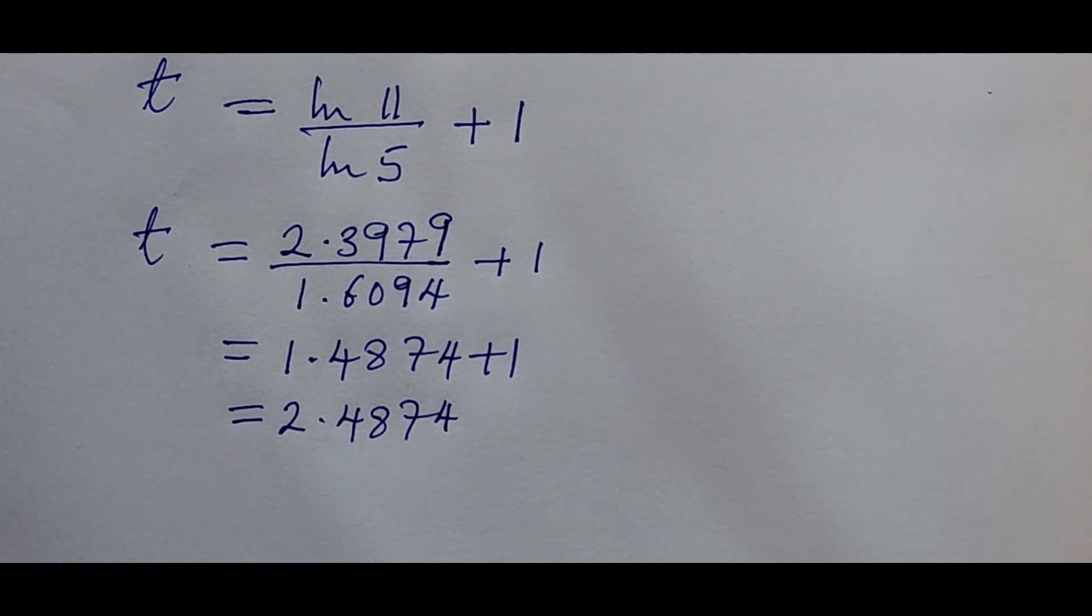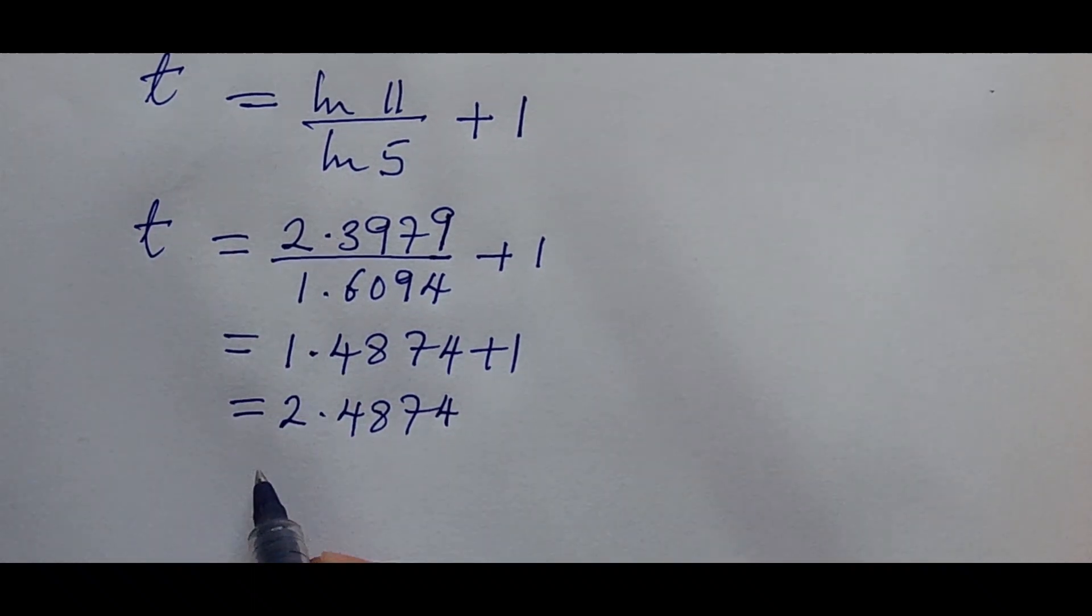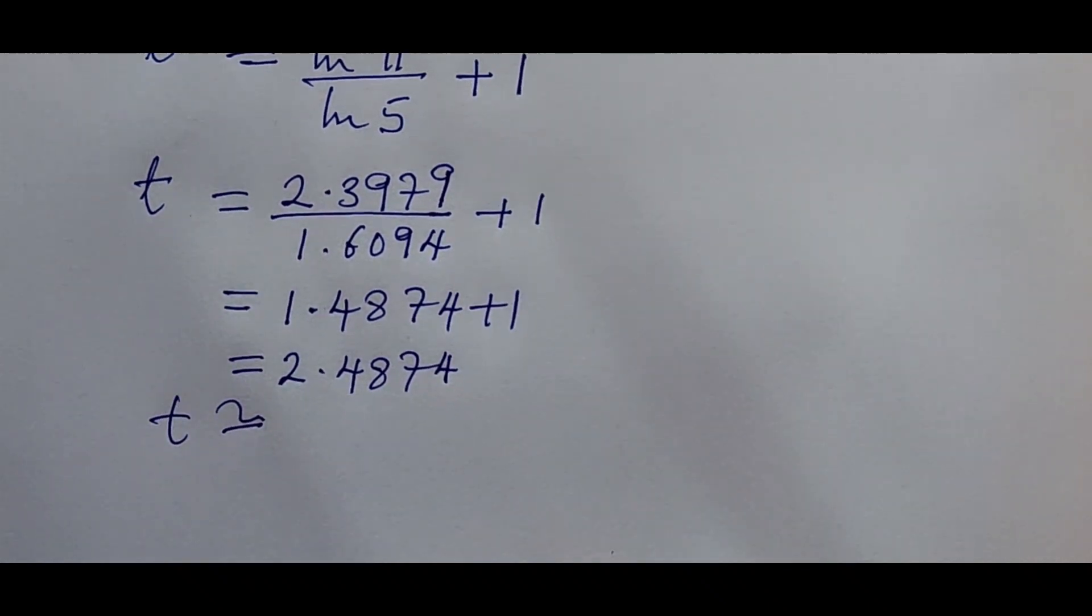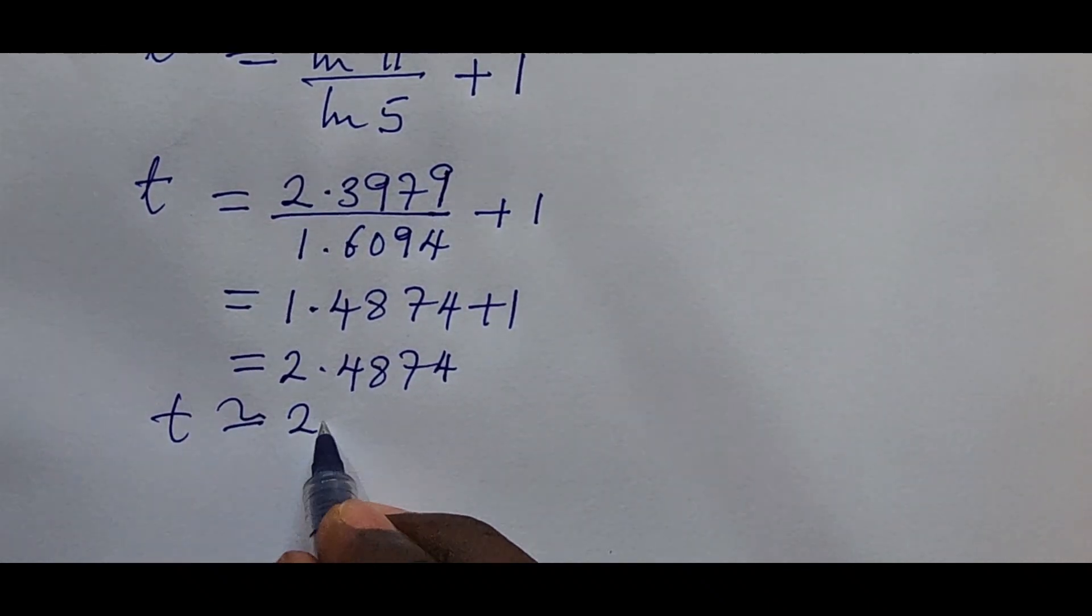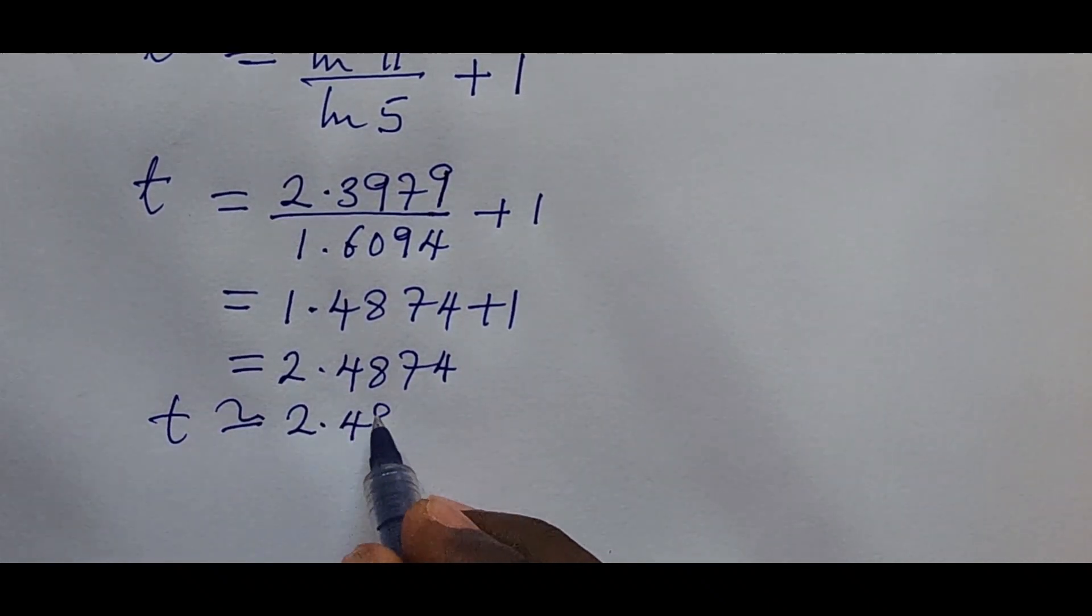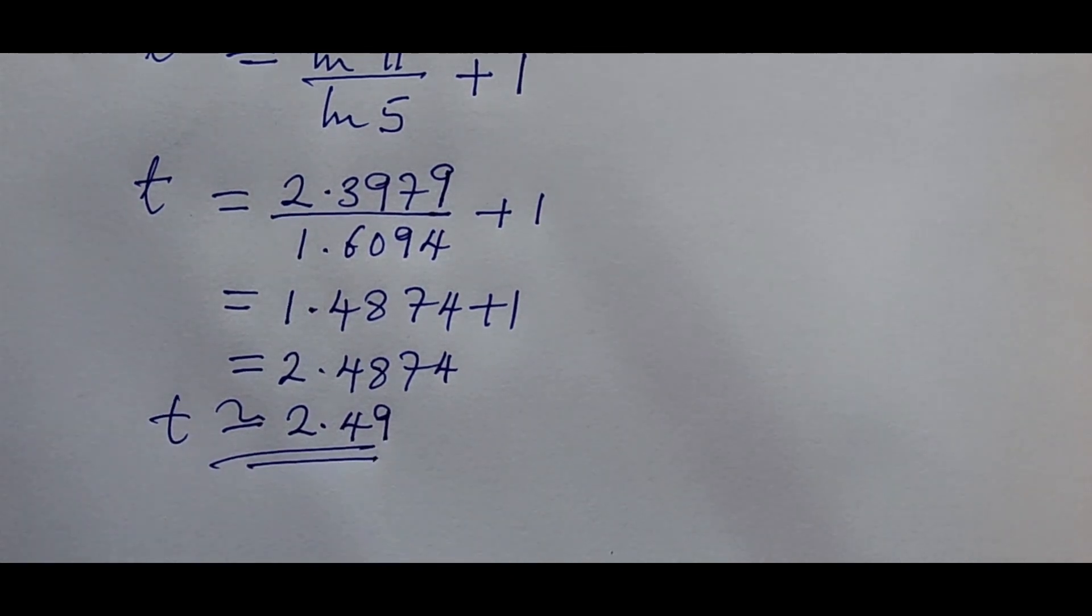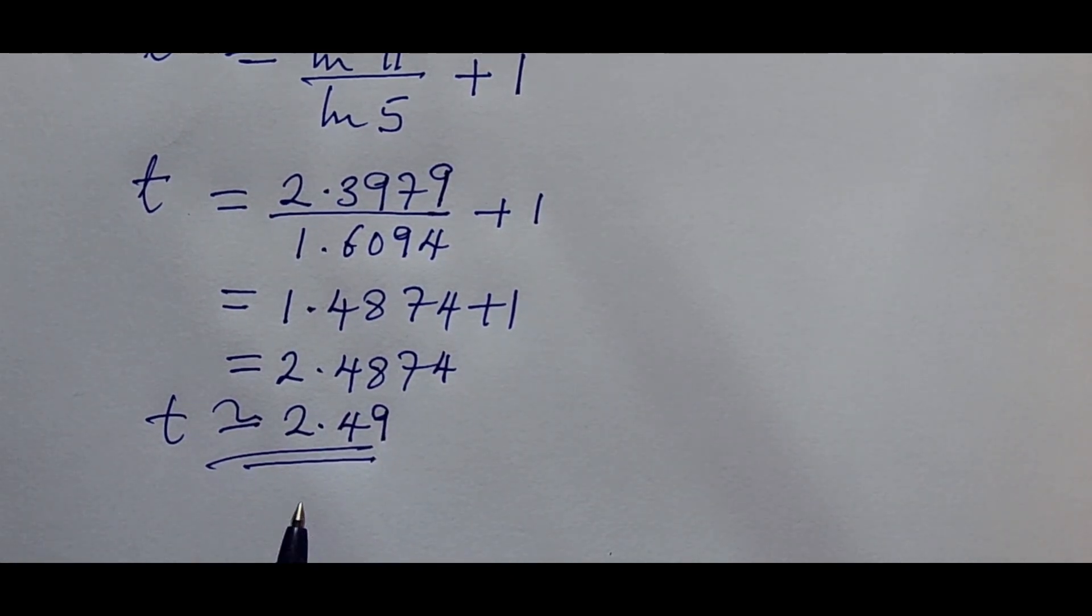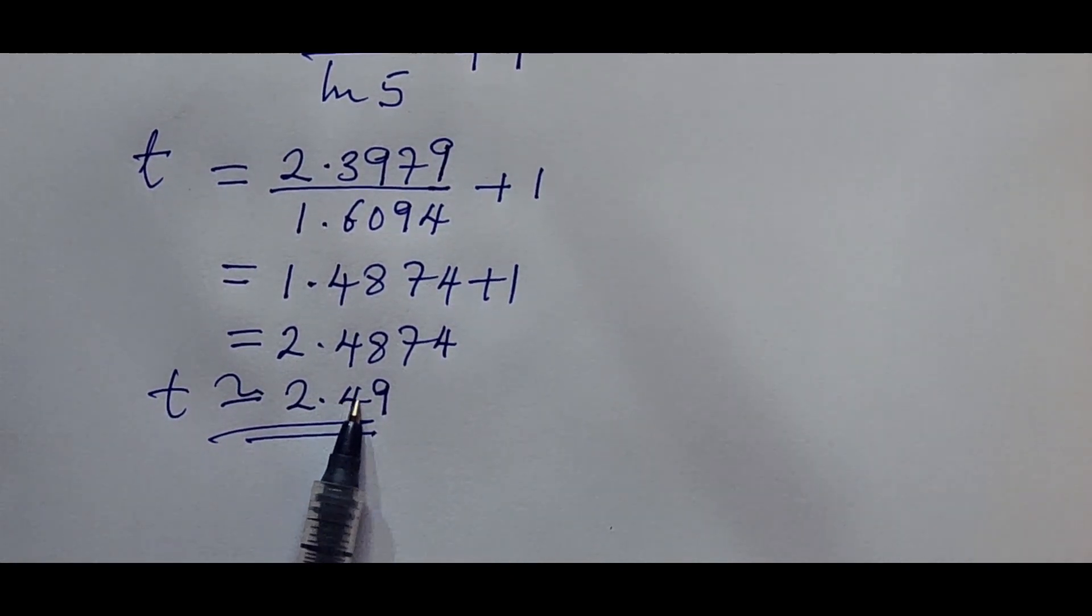So approximately we can now round this to two decimal places. So if we take it to two decimal places, our t here is going to give us 2.49 approximately. Good. So we want to put this value into the second expression which is what we are asked to look for here.